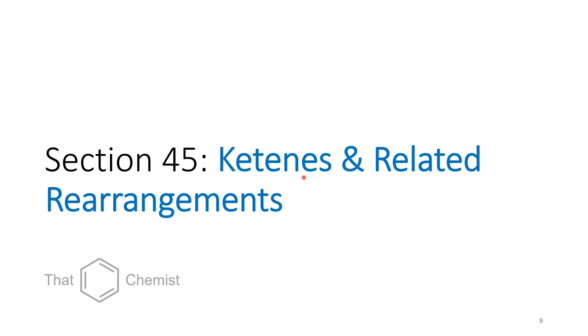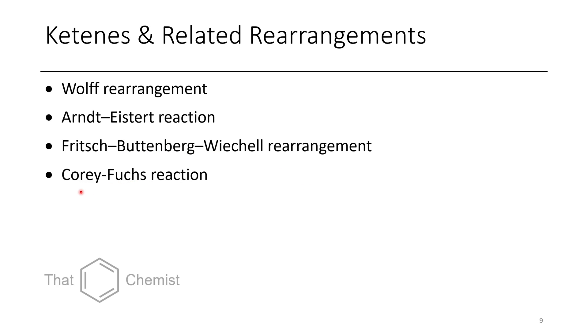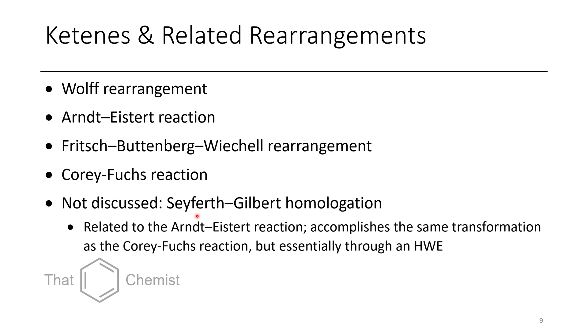So this lecture we're going to talk about ketenes and related rearrangements. Some of the reactions we're going to talk about include the Wolff rearrangement, the Arndt-Eistert reaction, as well as the Fritsch-Buttenberg-Wiechell rearrangement. Finally we're going to talk about the Corey-Fuchs reaction, but we're not going to be talking about the Seyferth-Gilbert homologation, although this is a really useful reaction. And if you needed to convert an aldehyde to an alkyne, this would probably be the easiest way to do that. It's a little bit easier than the Corey-Fuchs reaction, but it's one that's worth knowing. It's just due to the length of this lecture as is, I decided it would be worth excluding it.